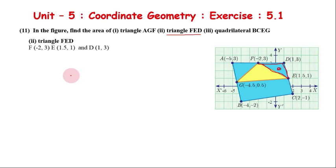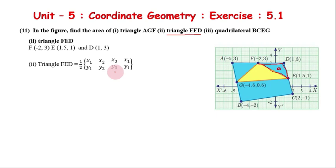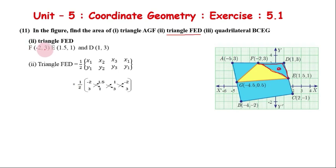Again we apply the triangle area formula: 1/2 with coordinates X1, Y1; X2, Y2; X3, Y3; back to X1, Y1. Substituting the points: 1/2 of (-2, 3), (1.5, 1), (1, 3), back to (-2, 3).